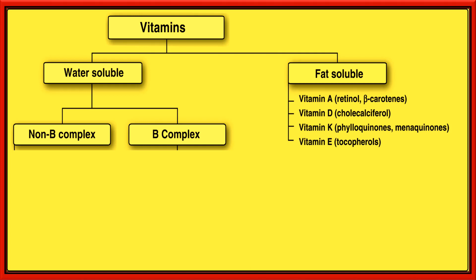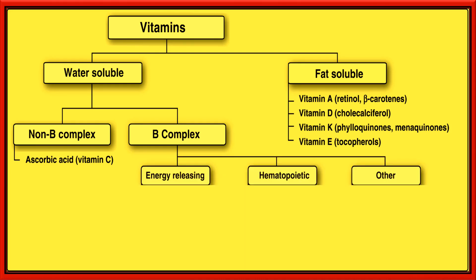Water-soluble vitamins are further divided into two types: non-B complex vitamins and B complex vitamins. Non-B complex is only ascorbic acid, which is vitamin C, and is considered the most important vitamin. B complex vitamins are further categorized into three types: energy releasing, hematopoietic, and some other types as well.